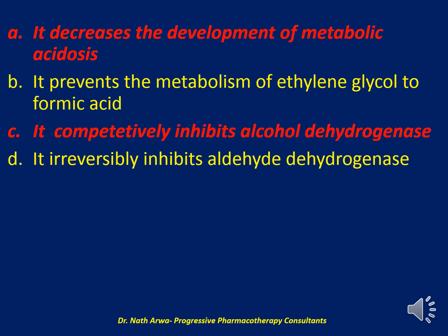Fomepizole decreases the development of metabolic acidosis and it also completely inhibits alcohol dehydrogenase. Fomepizole is a competitive antagonist of alcohol dehydrogenase, which is involved in the metabolism of toxic alcohols including methanol and propylene glycol. That makes those two answers correct — because if it blocks the formation of the acid, then acidosis will be decreased.